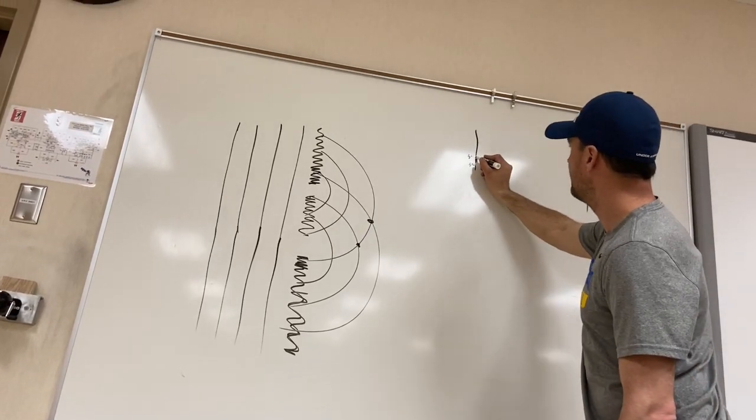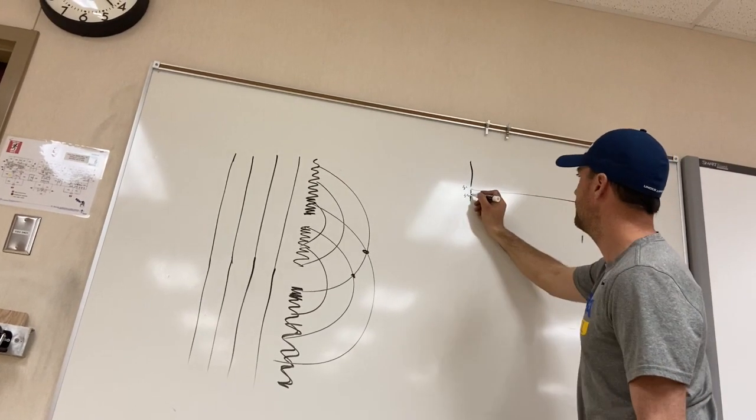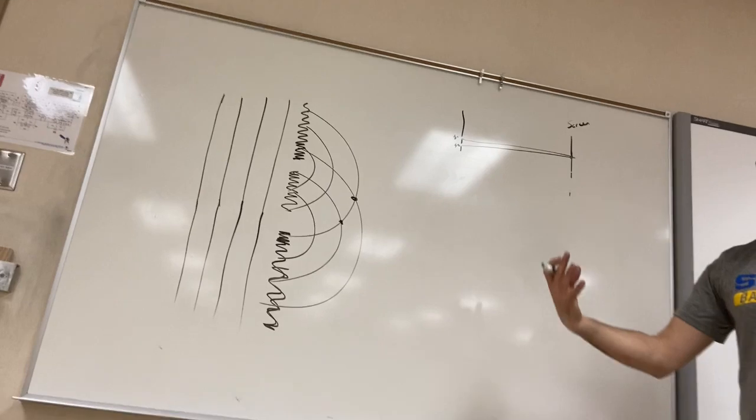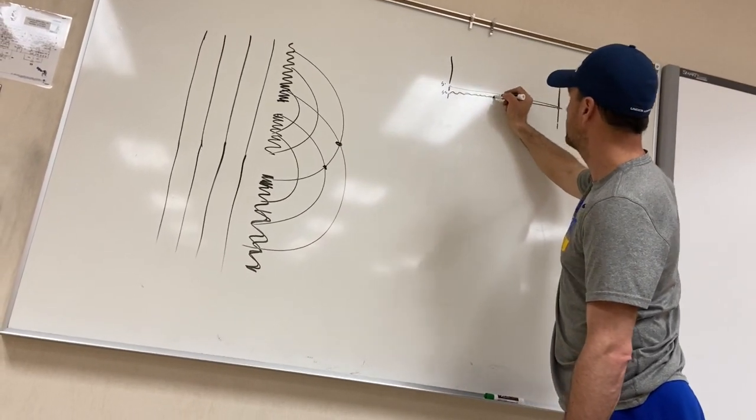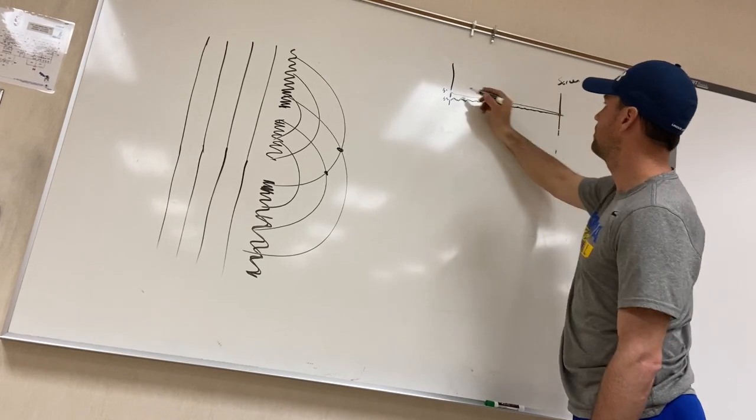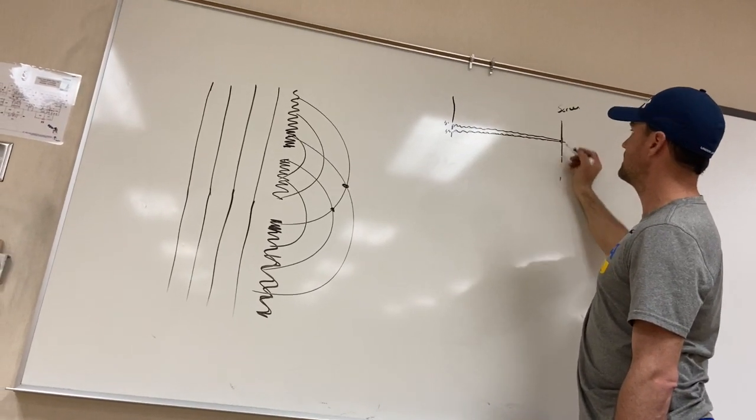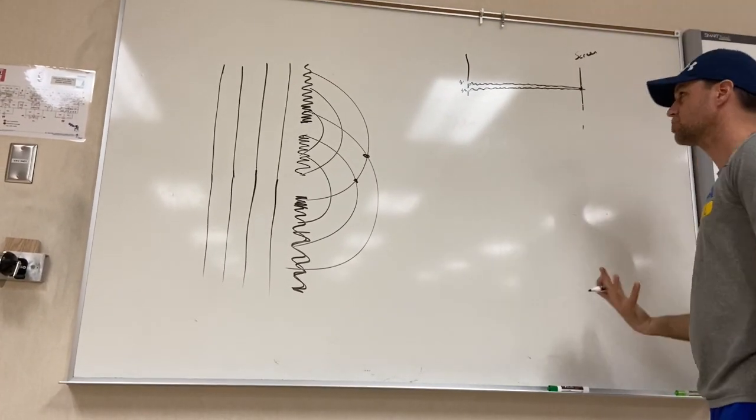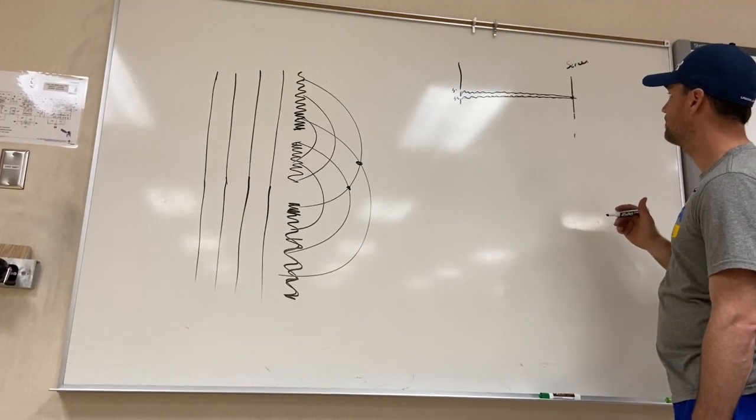I would expect that the path length from slit one to there and from slit two to there is the same number of wavelengths. You know, there's been many wavelengths. For the light that came through each slit, but they've gone the same number of wavelengths to get to right here. So that is constructive interference because the waves are in phase.